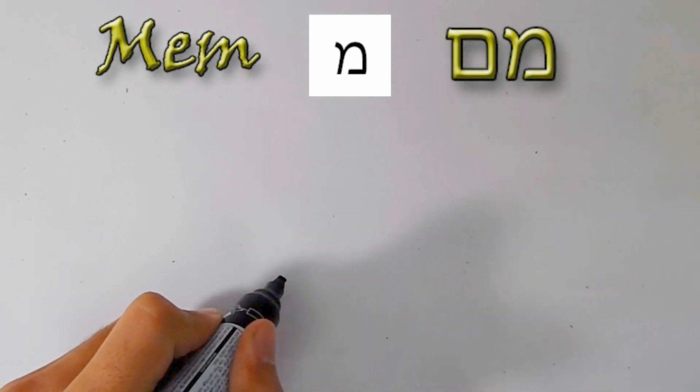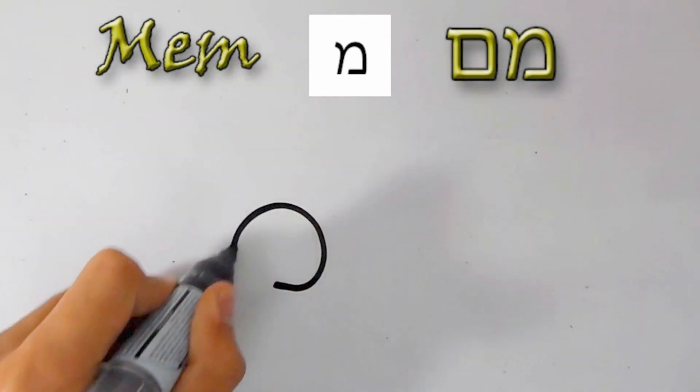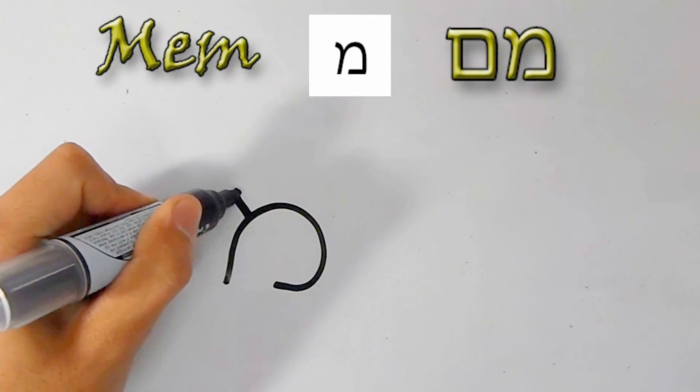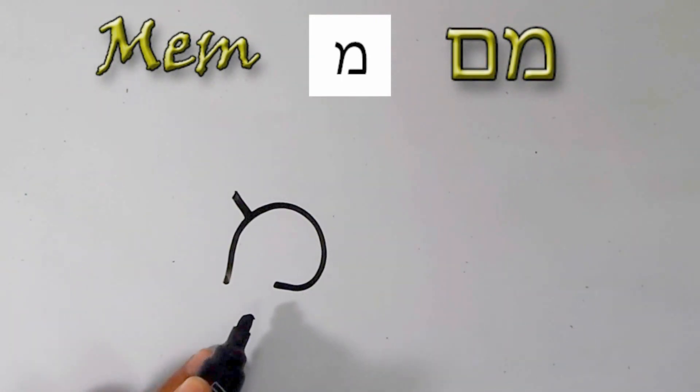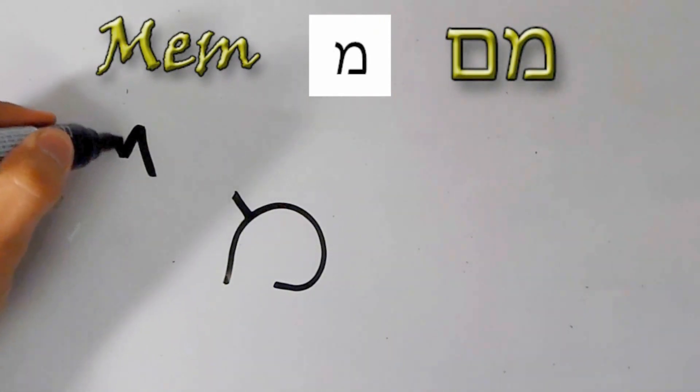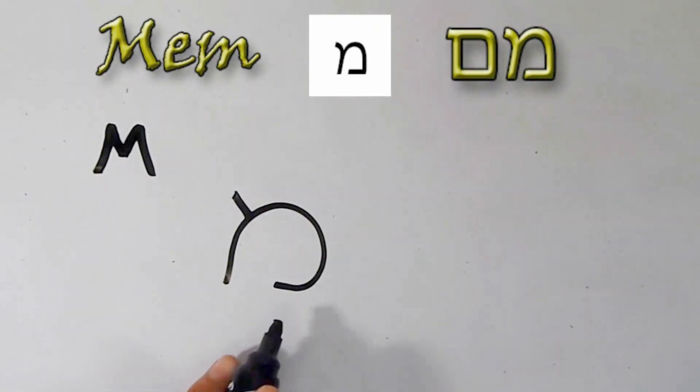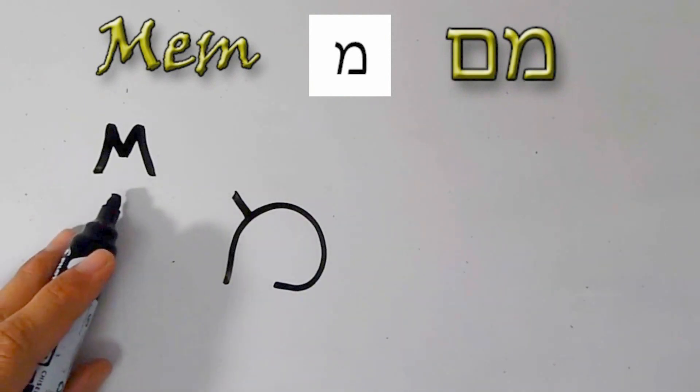Next is Mem. It's a bit tricky to write it down, but follow my hand, and like so. Mem. The English equivalent is M.